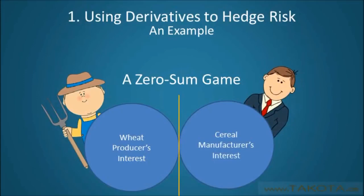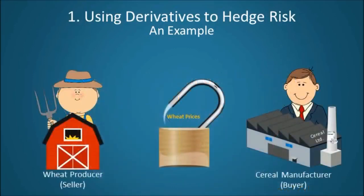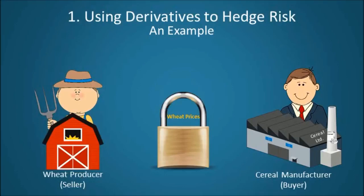Basically, the interests of only the wheat producer or the cereal manufacturer can be met, not both. So, in this example, a forward contract was used by both wheat sellers and wheat buyers in an effort to hedge price risk by locking in the price of wheat. We will discuss forward contracts in greater detail in another video, but what is most important to take away from this example is that derivatives can be used to hedge risk.